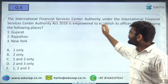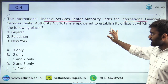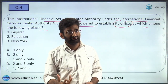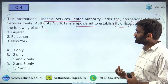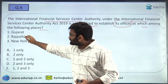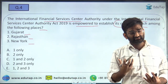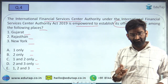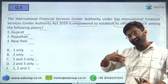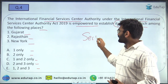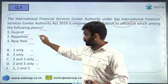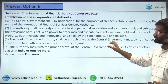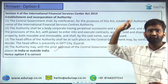Question 4: IFSCA under the IFSCA Act is empowered to establish its offices at which of the following places — Gujarat, Rajasthan, New York? The options are: 1 only, 2 only, 1 and 2, 2 and 3, or 1, 2 and 3. As per Section 4, Clause 4, offices can be established in India as well as outside India. Gujarat and Rajasthan are in India; New York is also valid. The correct answer is Option E — all three: 1, 2, and 3.